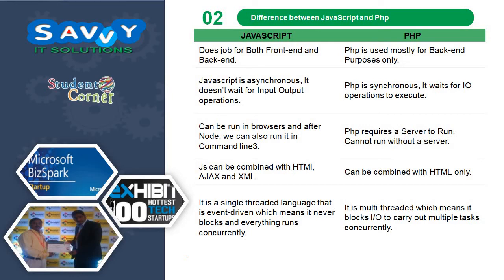The difference between JavaScript and PHP: JavaScript works for both front-end and back-end, whereas PHP is used mostly for back-end purposes only. JavaScript is asynchronous — it does not wait for input-output operations. PHP is synchronous — it waits for input-output operations to execute. JavaScript can be run in browsers, and after Node.js, it can also run in the command line. PHP requires a server to run and cannot run without a server. JavaScript can be combined with HTML, Ajax and XML, while PHP can be combined with HTML only. JavaScript is a single-threaded event-driven language, meaning it never blocks and everything runs concurrently. PHP is multi-threaded, which means it blocks input-output to carry out multiple threads concurrently.